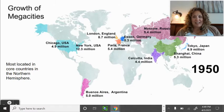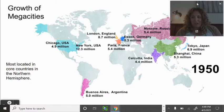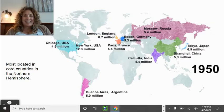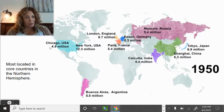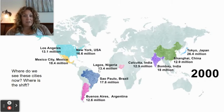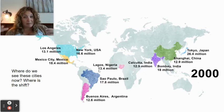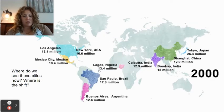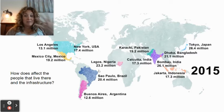Looking at the growth of mega cities: in 1950, most were located in the Northern Hemisphere, which makes sense since the vast majority of population is north of the equator. By 2000, a shift started happening — the presence of mega cities began moving southward. By 2015, the map shows even more shifting south and central, raising questions about how infrastructure can keep up with that growth.